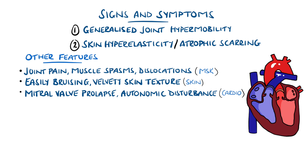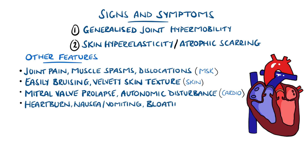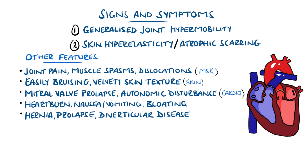Gastrointestinal disturbance is also common, such as heartburn, chronic nausea or vomiting, bloating, and pain that may be relieved with defecation, with a link to irritable bowel syndrome. There are commonly hernias, prolapses, and the presence of diverticular disease.